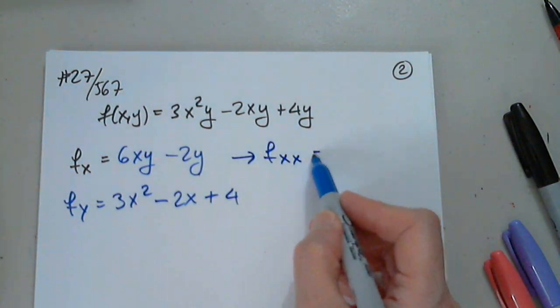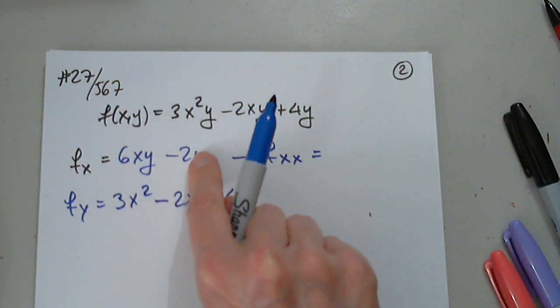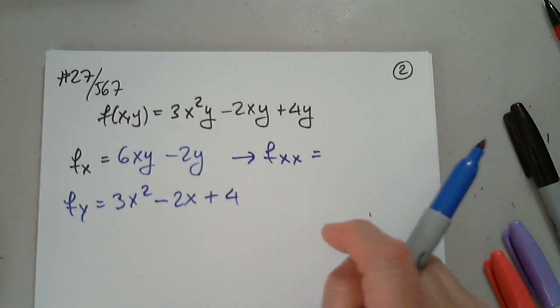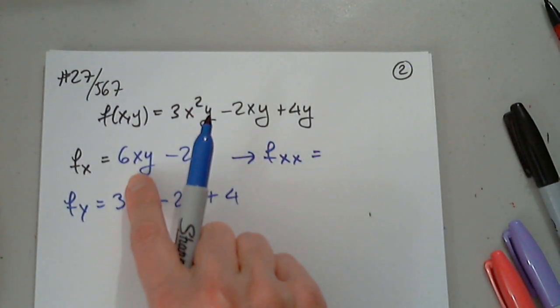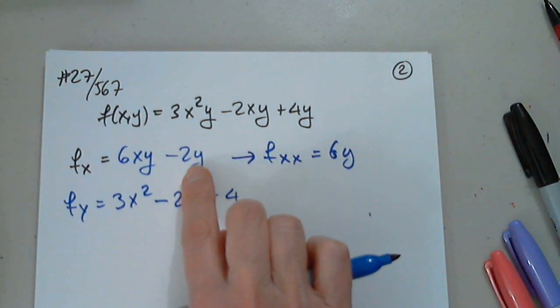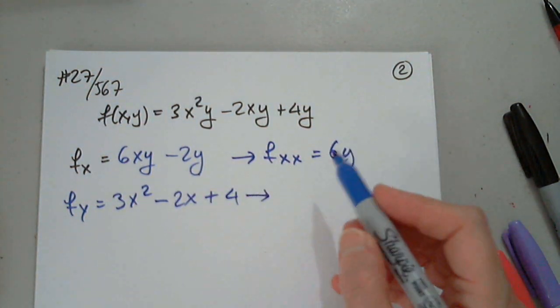Let's find fxx. We differentiate this again with x. Everything else is a constant. 6y. That's it. We differentiate with respect to x. 0. Perfect.